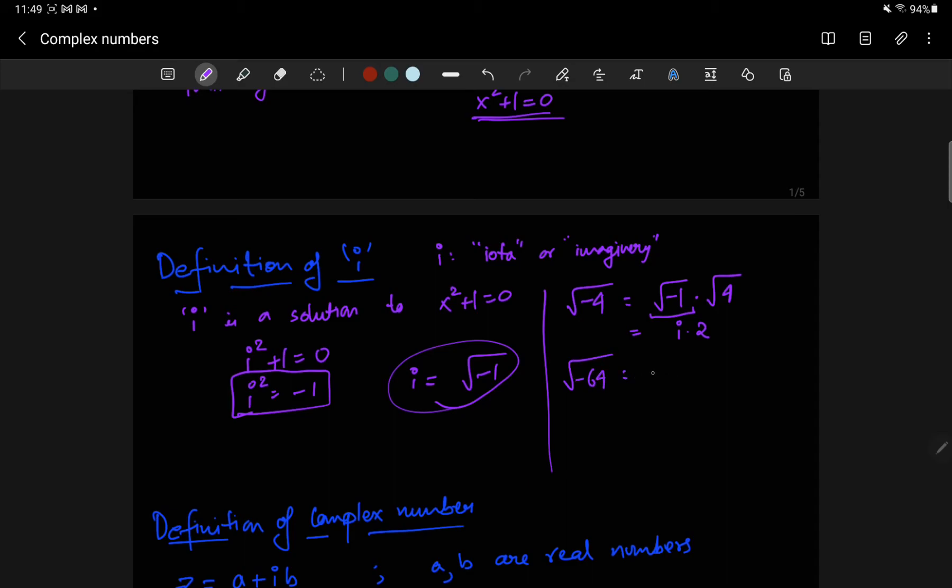Similarly, negative 64. This is negative 1 times 64. This is i, and this is 8. So here, it's a cool thing that just by defining one negative square root as i, you have now defined all possible negative square roots.